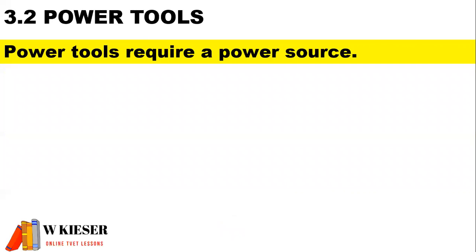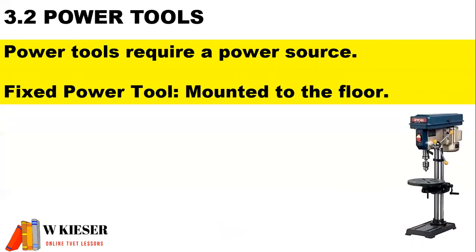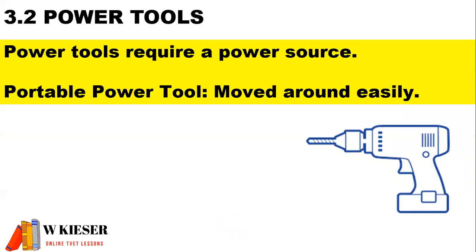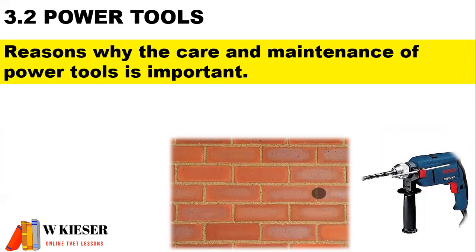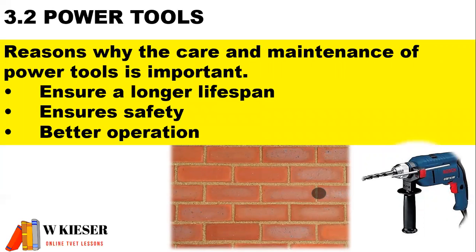In unit 3.2 for power tools: power tools require a power source. For example, a fixed power tool is mounted to the ground — such as a drill press. A portable power tool is moved around easily, such as a DC battery-powered portable drill. Reasons why the care and maintenance of power tools is important include ensuring a longer lifespan, safety, and better operation.